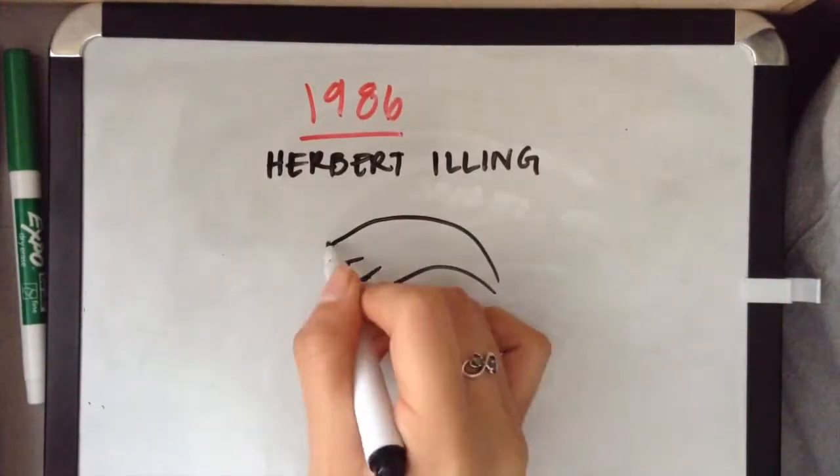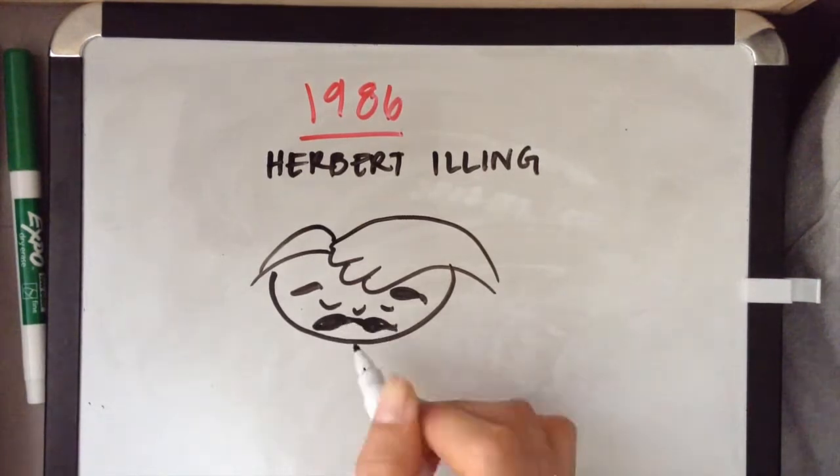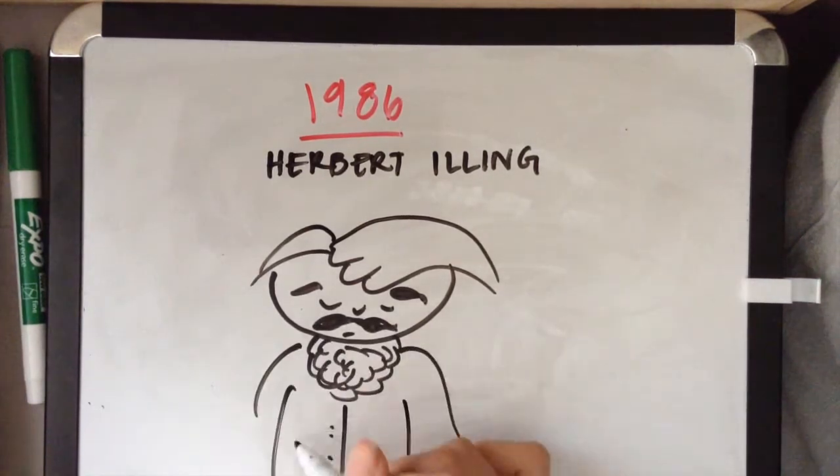This theory was first proposed in 1986 by a man named Herbert Ehrling who pondered the idea of the Middle Ages.